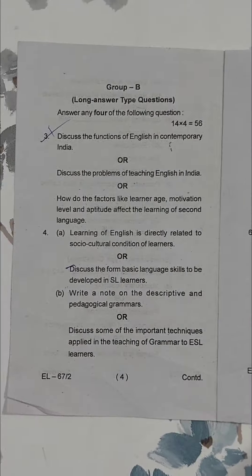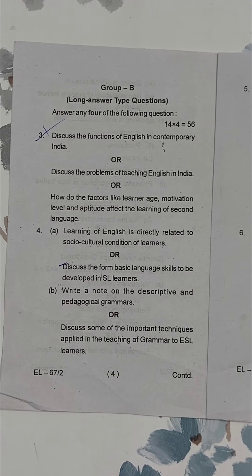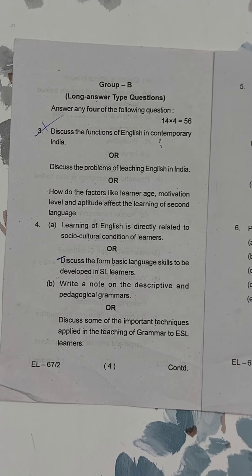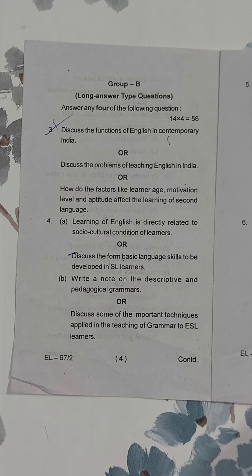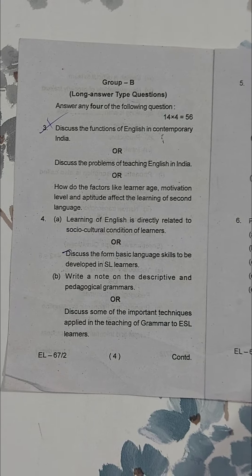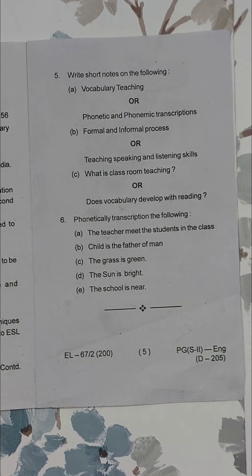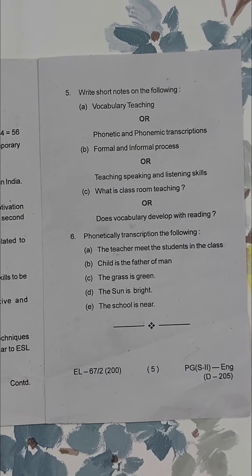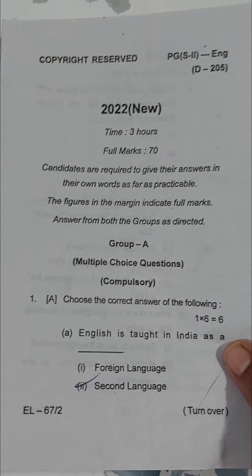Now we have Group B. In Group B you have to answer four questions of 14 marks each. This is page four and this is the last page, page five. So that is it about paper number five.